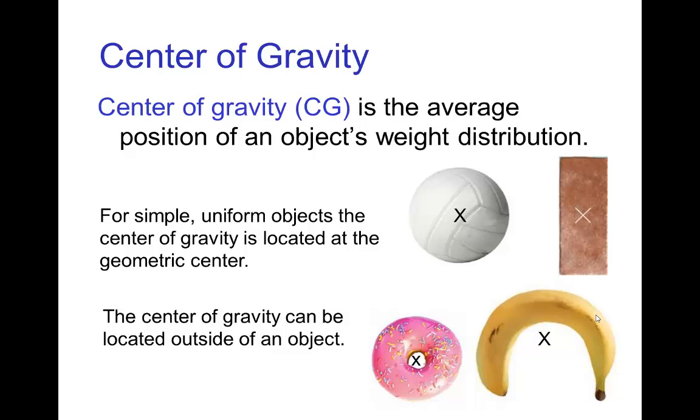The center of gravity is the average position of an object's weight distribution. For some simple objects like a brick or a ball, it would be the geometric center.